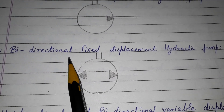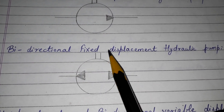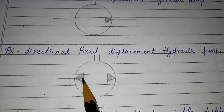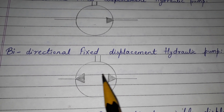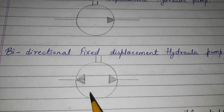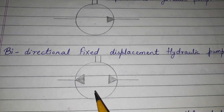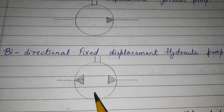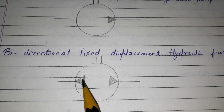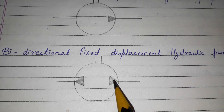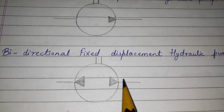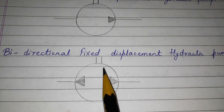Next is the bidirectional fixed displacement hydraulic pump. As you can see, the flow is in two directions, that's why it is bidirectional. Fixed displacement means the discharge of this kind of pump is fixed. Here two triangles are shown, filled to indicate a hydraulic pump, showing flow going in two directions, along with the shaft.